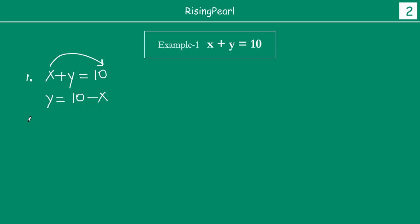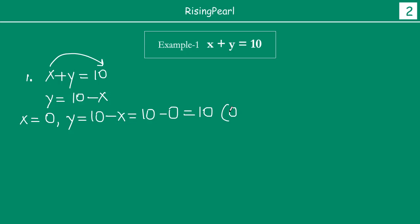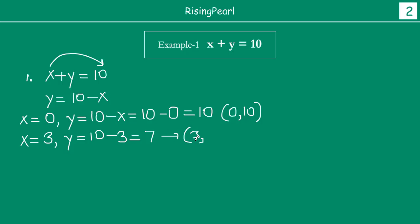Now, we will find 5 solutions. We will take 5 values for x. Let us take the first value: x equals 0. If x is zero, then y equals 10 minus x, which is 10 minus 0, which is 10. So our first solution is x = 0, y = 10. Now let us take x equals 3. If x is 3, then y equals 10 minus 3, which is 7. So our second solution is x = 3, y = 7.